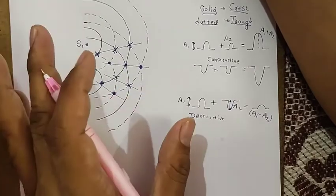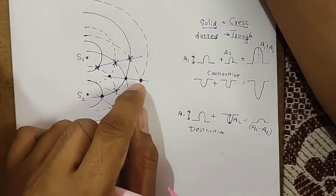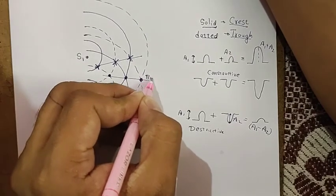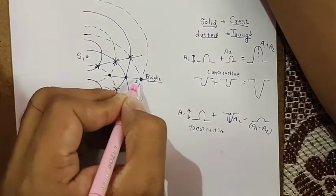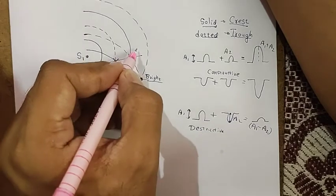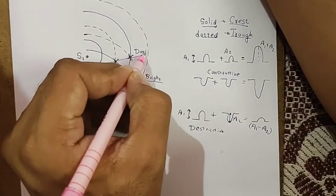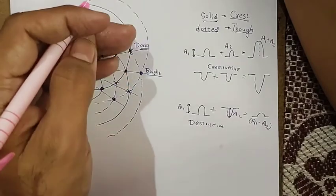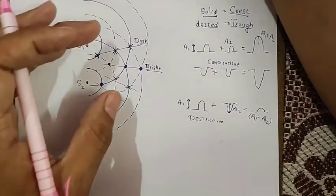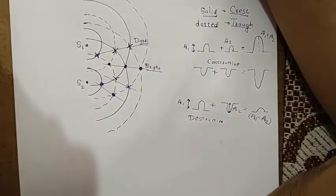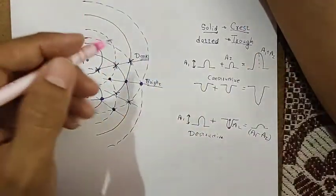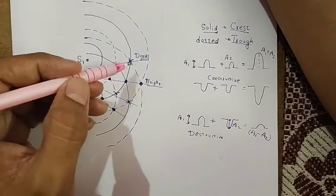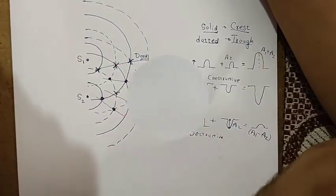If these waves are light waves, then at constructive interference we get bright points where brightness suddenly increases, and at points where destructive interference occurs, we get dark points. So in case of light, you will get an alternate pattern of bright and dark points. This pattern is called the interference pattern.